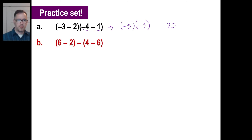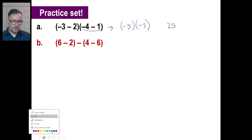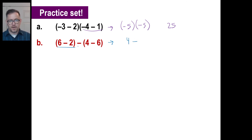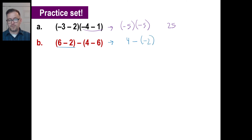Pause and try B. Don't get hung up with the negatives — just do exactly what you have. Parentheses first: we've got a 4 there. 4 minus 6 is negative 2. Then 4 minus negative 2 is the same thing as 4 plus 2, so that's 6.